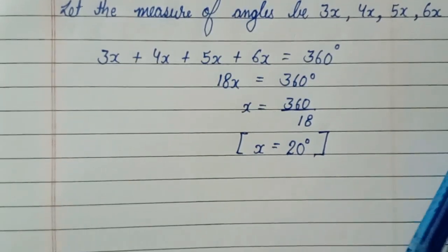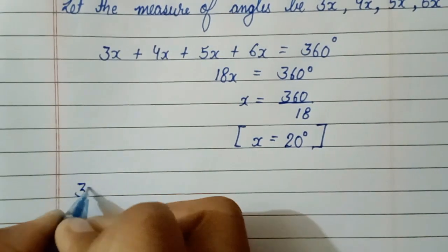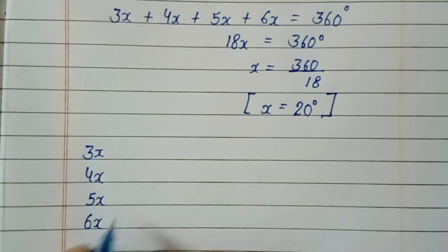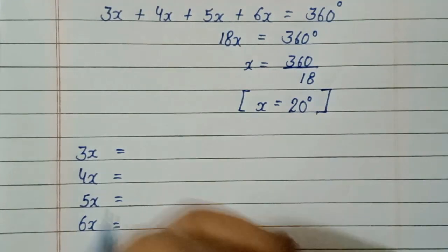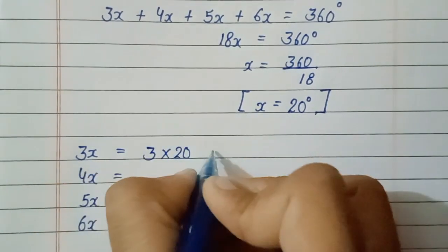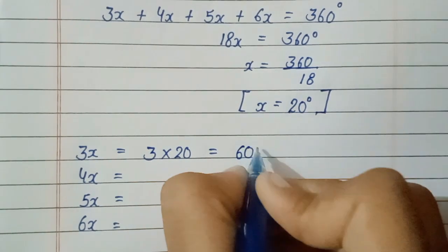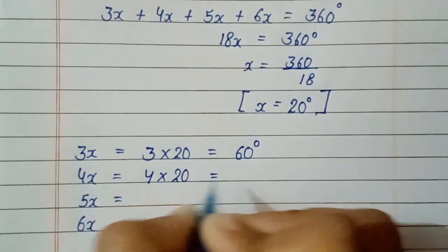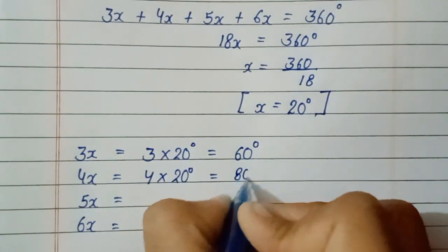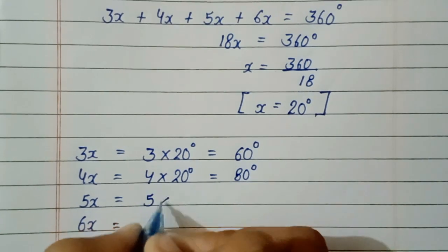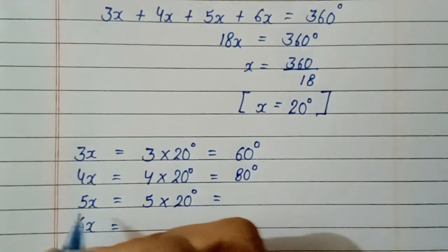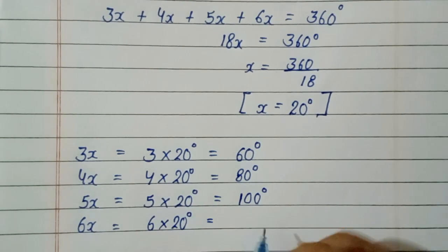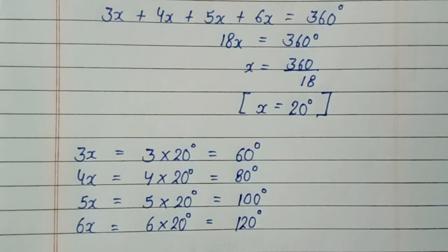Now we have x and we can find each angle. The angles are 3x, 4x, 5x, and 6x. So 3x means 3 into 20, which gives 60 degrees — this is the first angle. Then 4x: 4 into 20 gives 80 degrees. Then 5x: 5 into 20 gives 100 degrees. Then 6x: 6 into 20 gives 120 degrees. These are the angles of the quadrilateral.